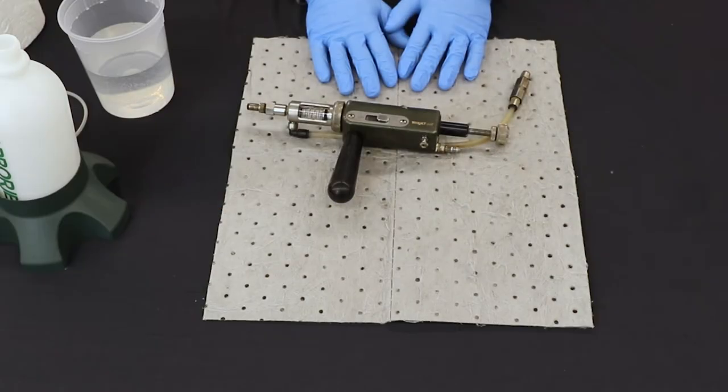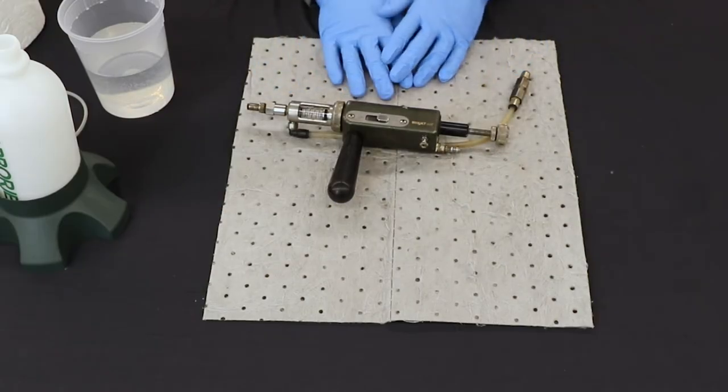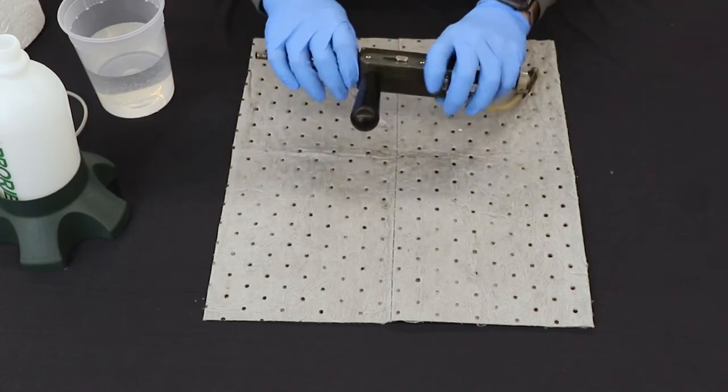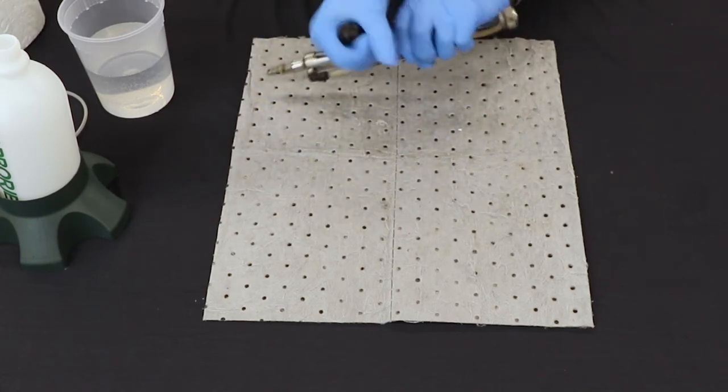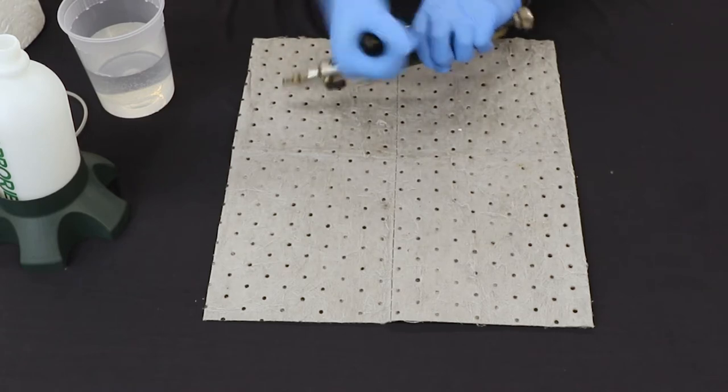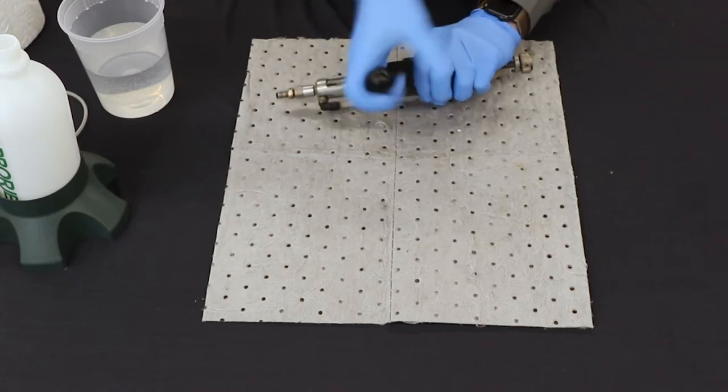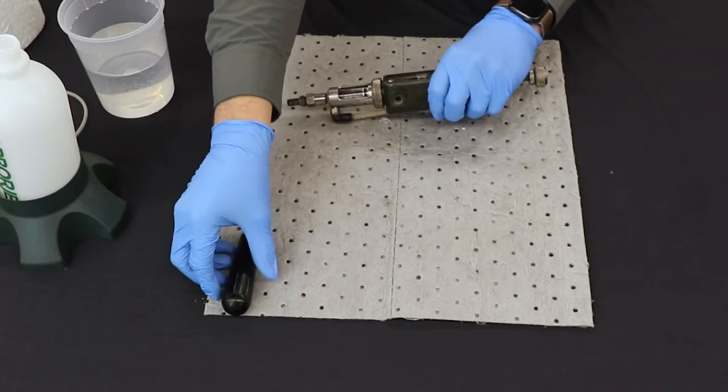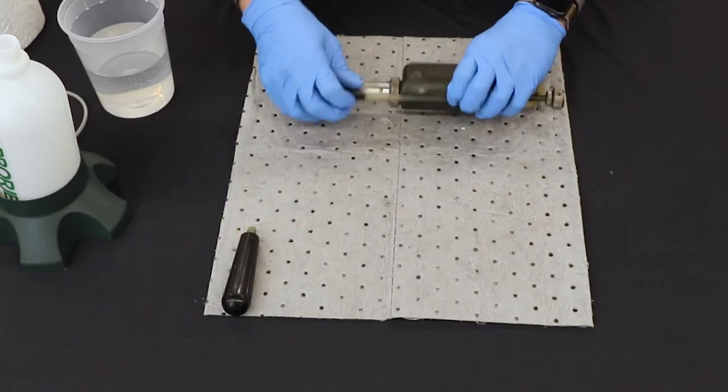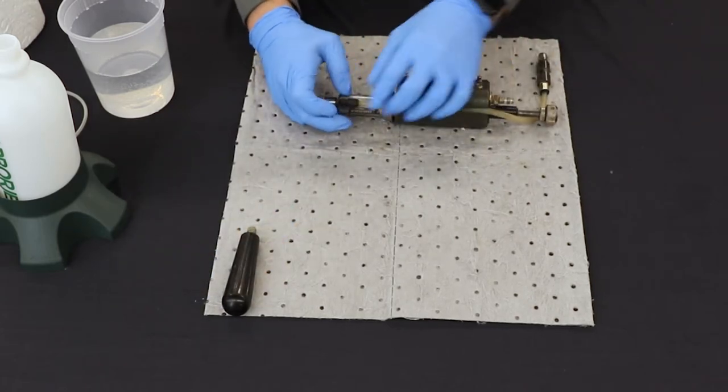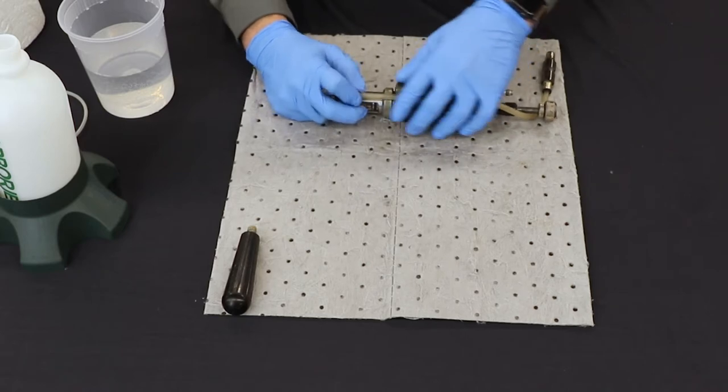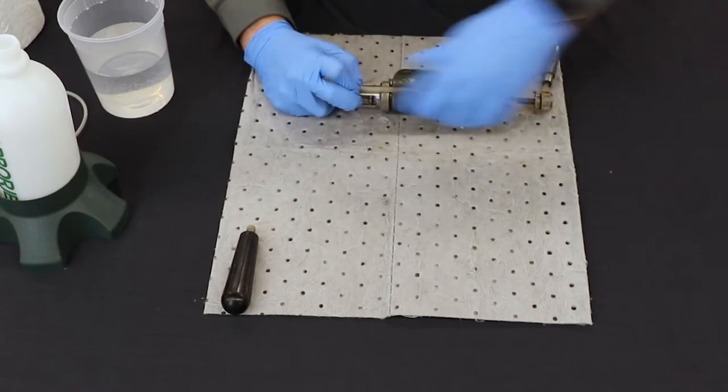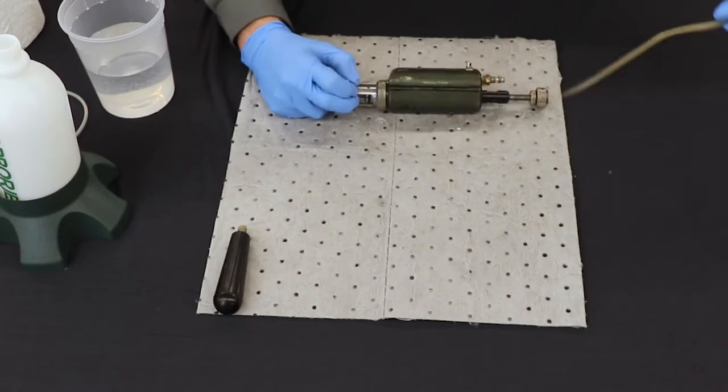The first thing we're going to do is completely disassemble the gun and get all the old seals and o-rings off. To get started, first I just take off the little handle on the bottom just so it's a little easier to work with. Then to take the front barrel off the gun, you pull back on this collar on the quick connect for the hose and we're just going to slide that right out of the body of the gun.